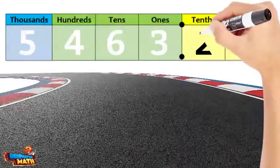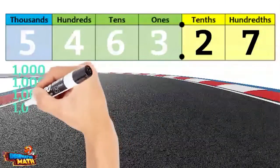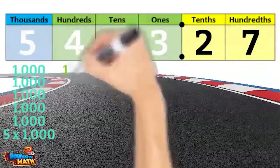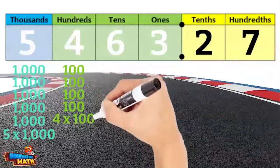In this number there are five thousands. In expanded notation, we would write this as the product five times one thousand. There are four hundreds. In expanded notation, this is written as the product four times one hundred.